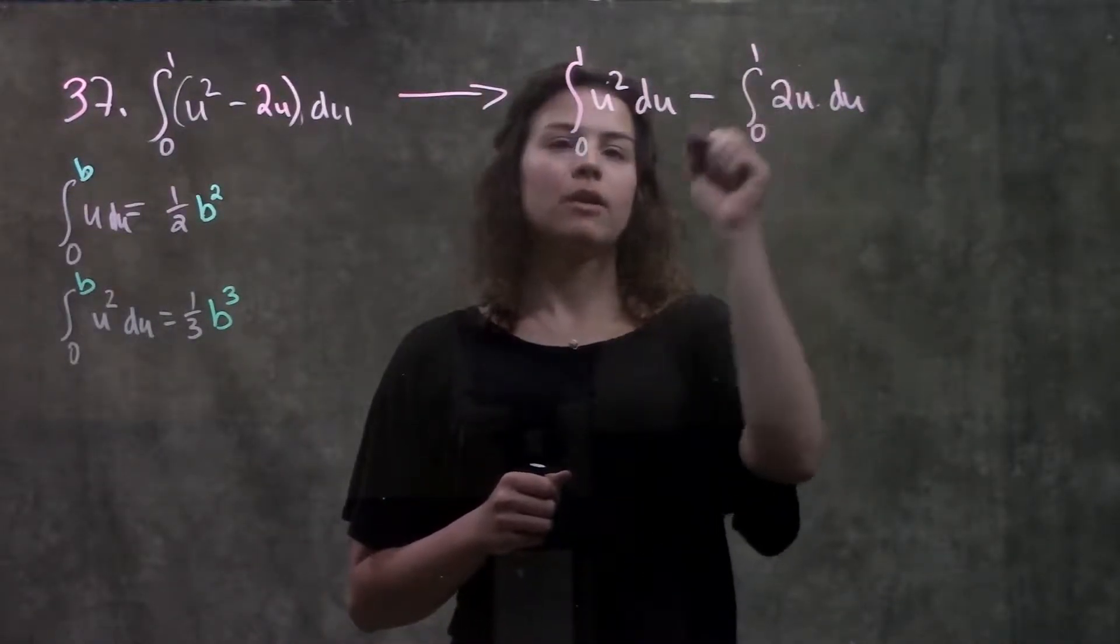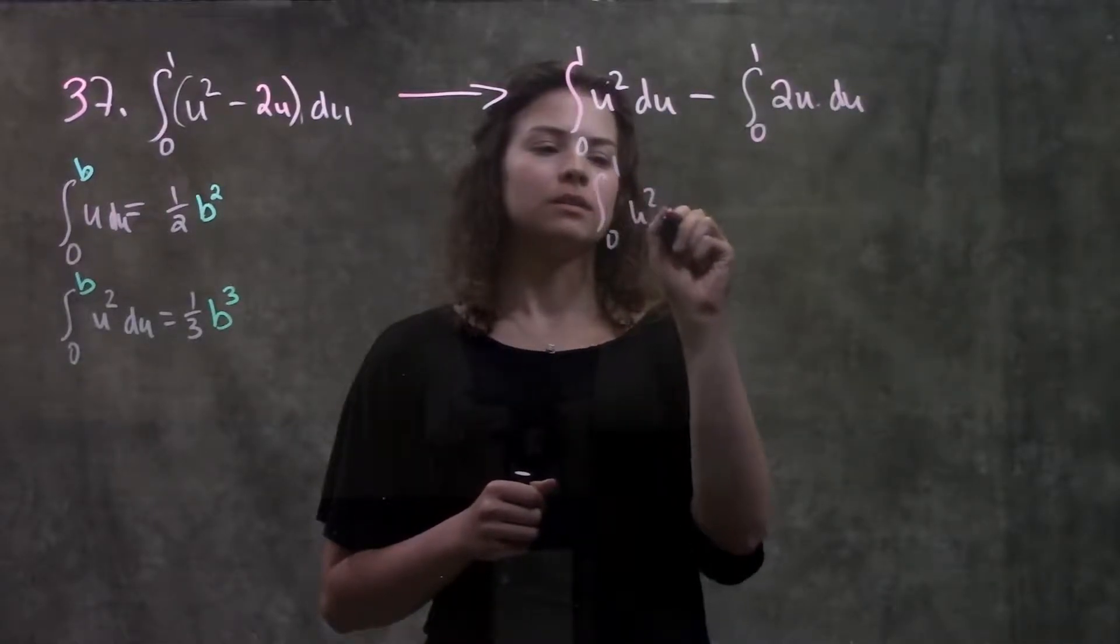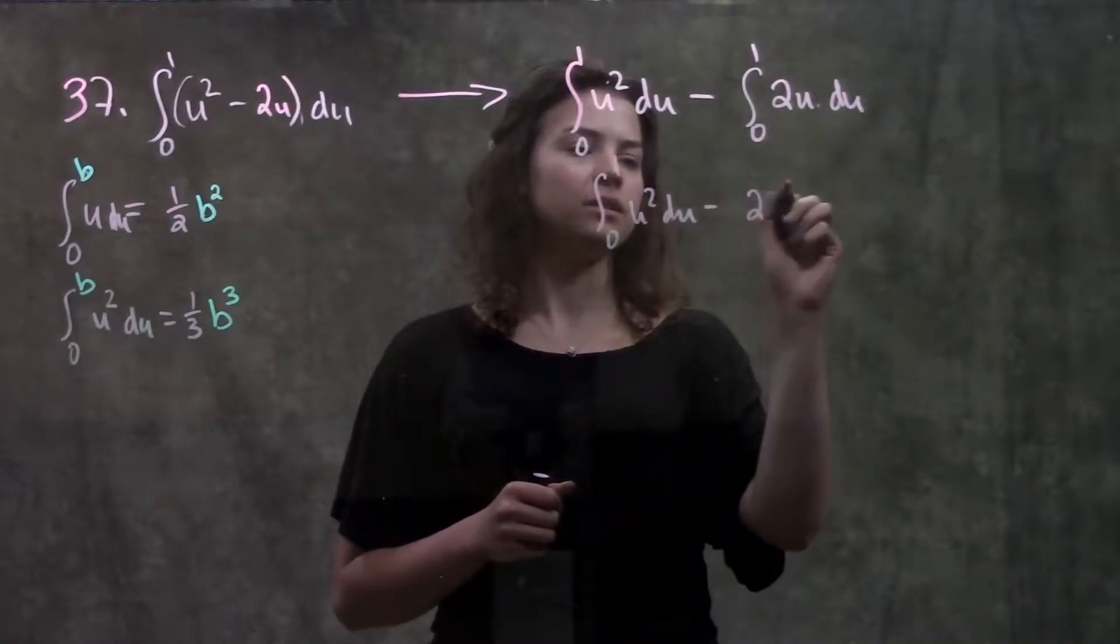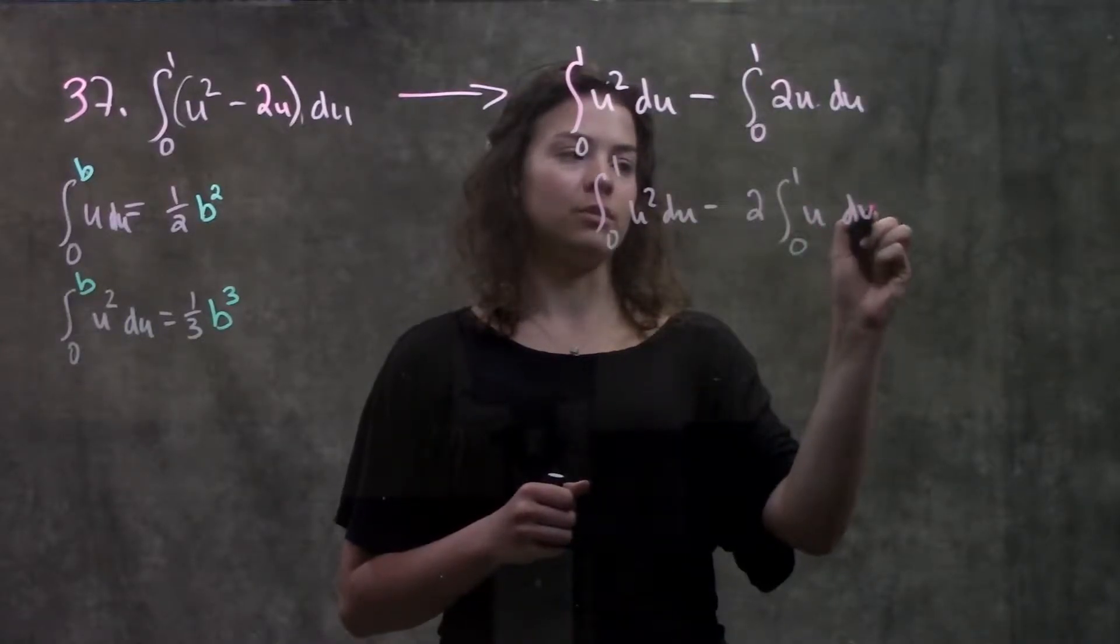And remember for this part here, we can go ahead and take out the constant. So now it becomes minus 2 integral from 0 to 1 of just u du.